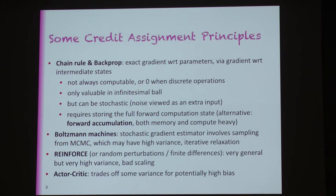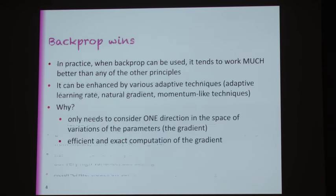In the case of a neural net, if you do that for every neuron or every weight, the amount of noise goes linearly with the number of parameters. That's not going to scale to very large nets. Actor-critic, also from reinforcement learning, is better in many ways and trades off some of the variance of REINFORCE in exchange for bias. In practice, backprop has been really winning over all the other credit assignment methods — and that's even more true when you consider all the ways it's been improved using adaptive learning rate techniques and natural gradient or momentum-like techniques. So it's interesting to think about why backprop is working so much better than all the other credit assignment methods.